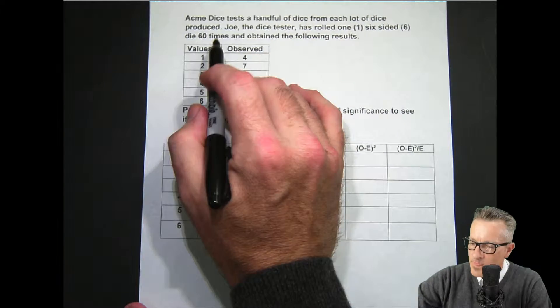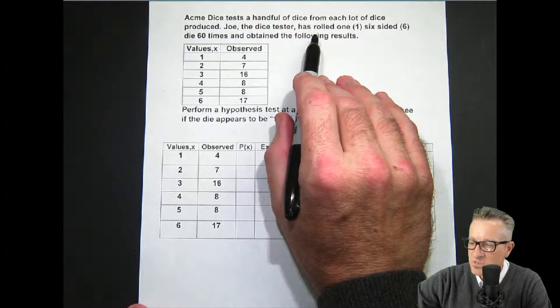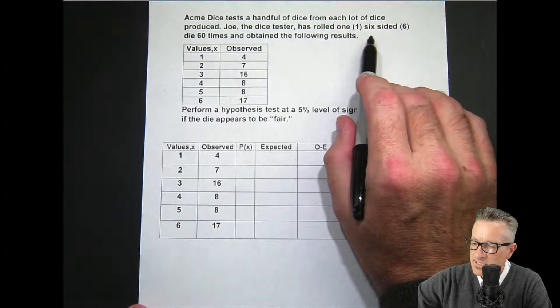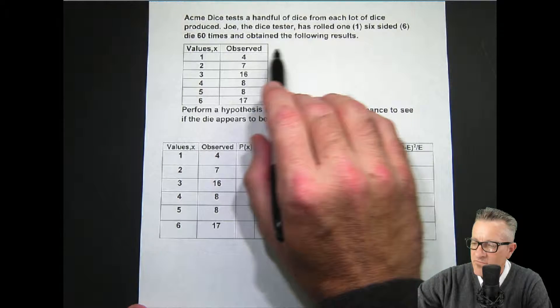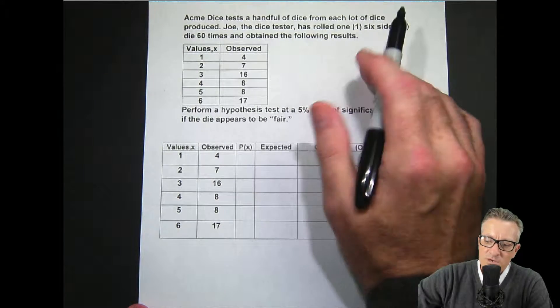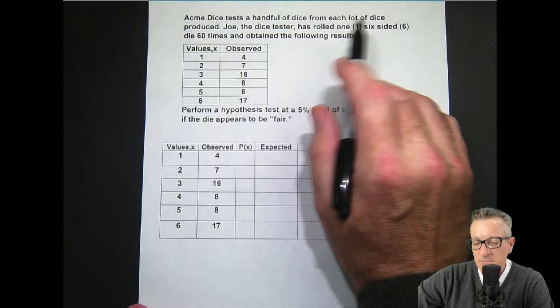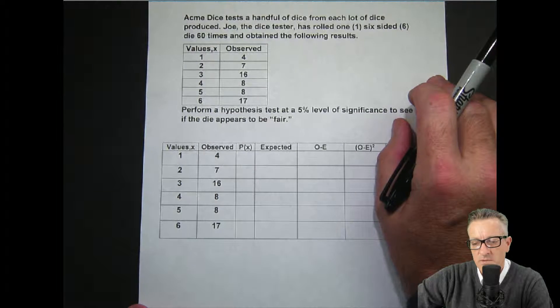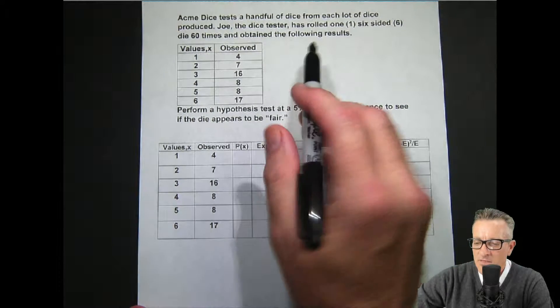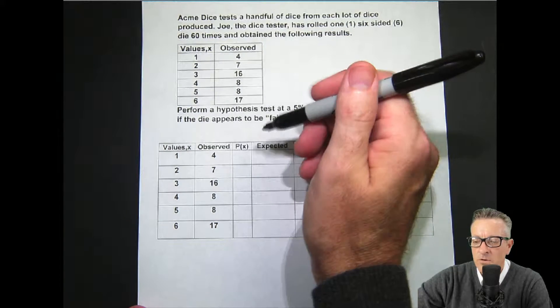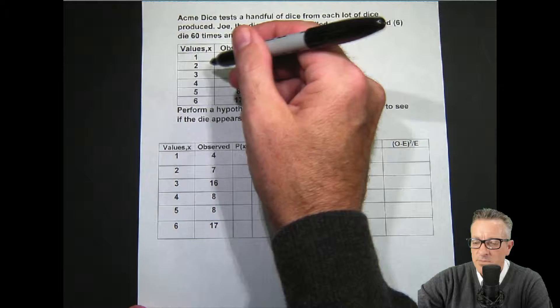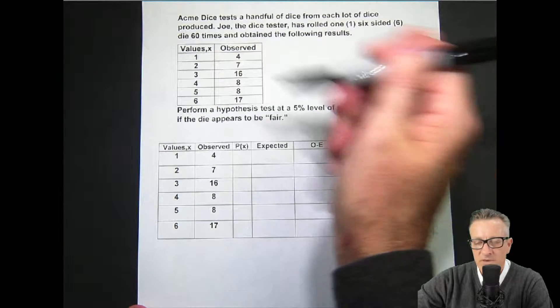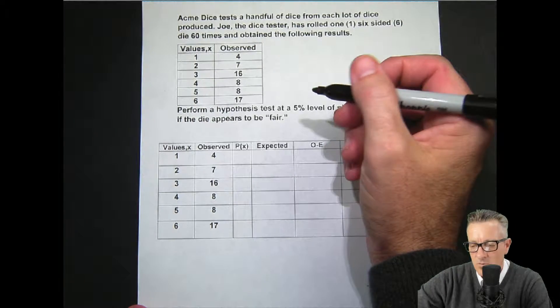Acme Dice tests a handful of dice from each lot of dice produced. Joe, the dice tester, has rolled one six-sided die 60 times and obtained the following results. This guy is going to roll the dice a bunch of times, in this case 60 times, and he wants to see if it appears to be fair. If it's fair, then we would expect he would observe an equal amount of outcomes for each side. That would be a fair die. You would assume that it's not weighted or anything like that.